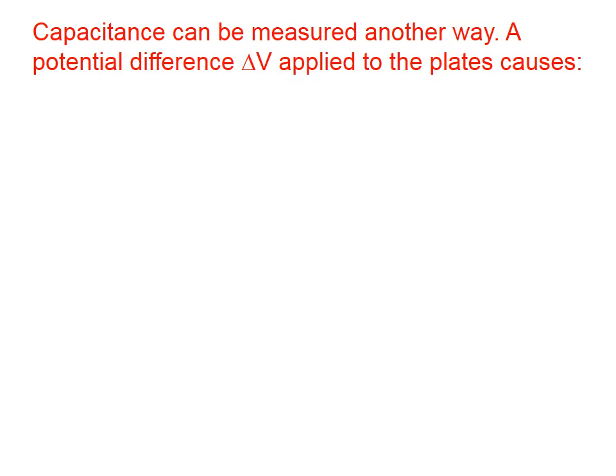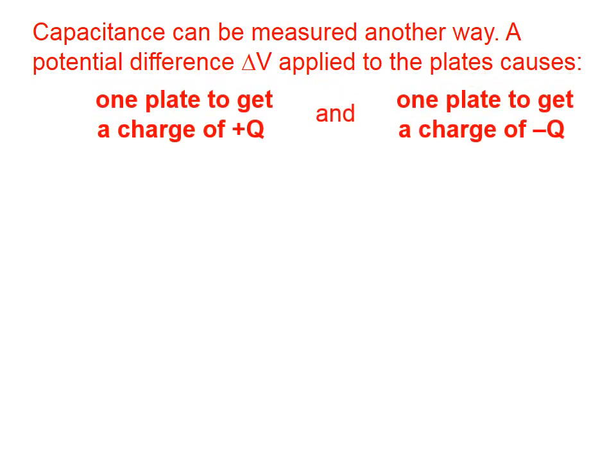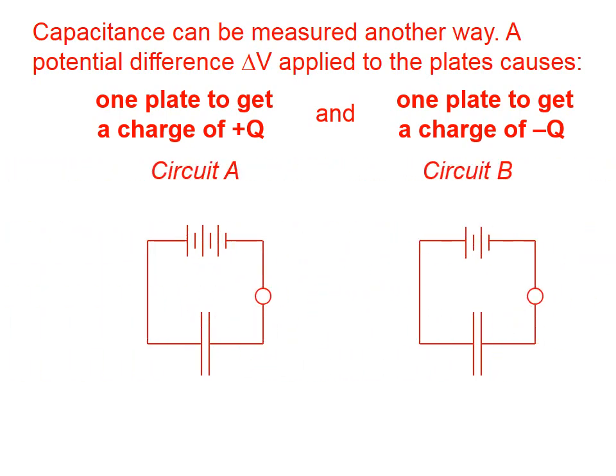Capacitance can be measured another way. A potential difference delta V applied to the plates causes one plate to get a charge of positive Q and one plate to get a charge of negative Q. Here we have two schematic diagrams of two different circuits. Everything is the same about these two circuits, except in circuit A we have three batteries and in circuit B we have two batteries.